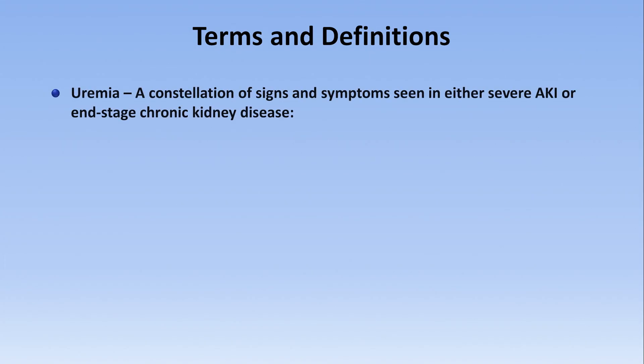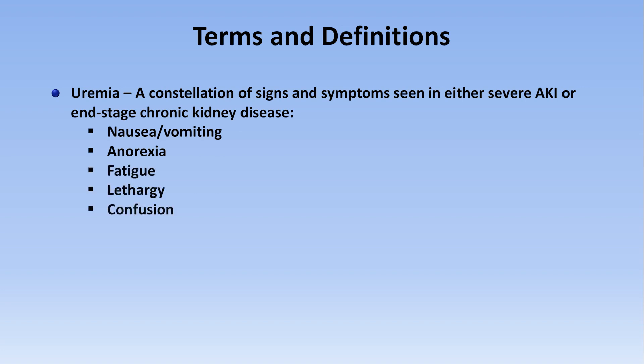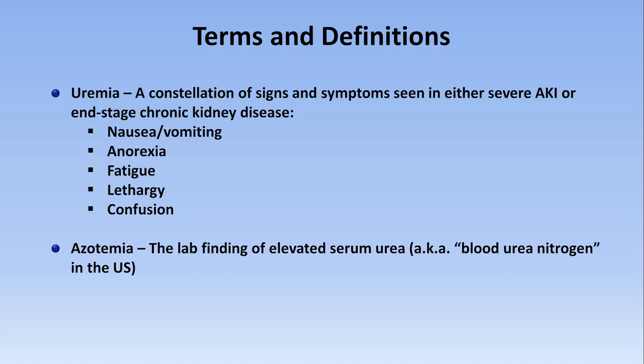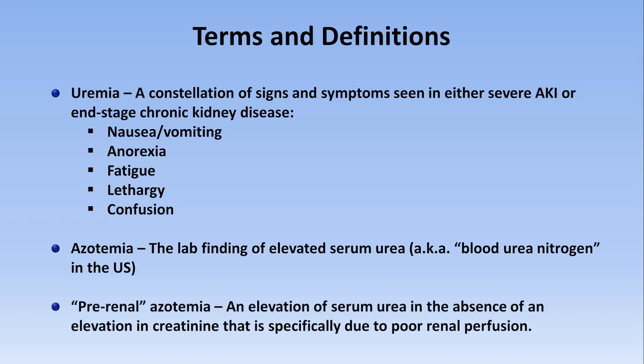Returning to the definitions, there are a couple of additional ones you'll need to know when discussing a patient with AKI. Uremia is a constellation of signs and symptoms seen in either severe AKI or in end-stage chronic kidney disease, including nausea and vomiting, anorexia, fatigue, lethargy, and confusion. Azotemia refers to a buildup of nitrogen-containing metabolic waste products in the blood; in practice, the only such compound we routinely measure is urea, or blood urea nitrogen. Pre-renal azotemia is an elevation of serum urea in the absence of an elevation in creatinine, specifically due to poor renal perfusion.